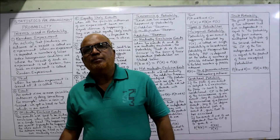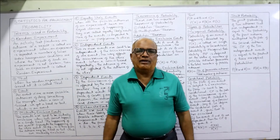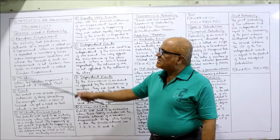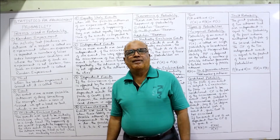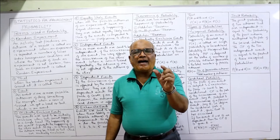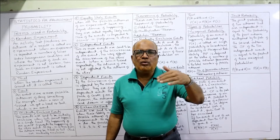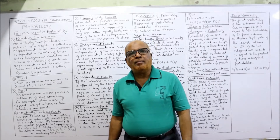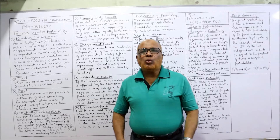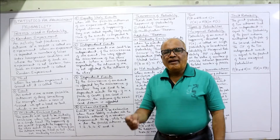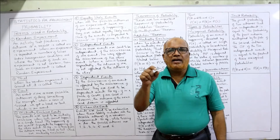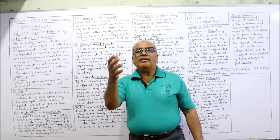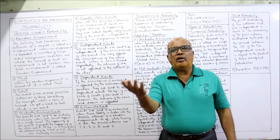The first term used in probability is random experiment. Any activity which produces some result is called an experiment. For example, throwing a coin — when you throw the coin, you will get an outcome. The result of throwing the coin is you may get head or you may get tail.